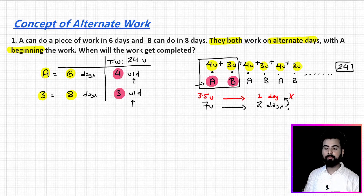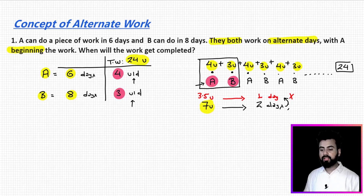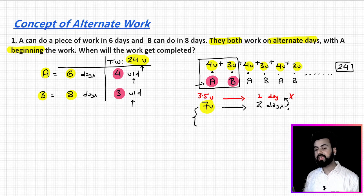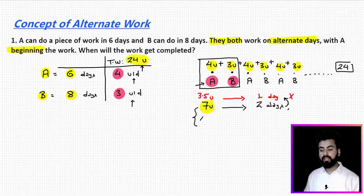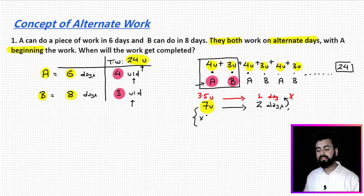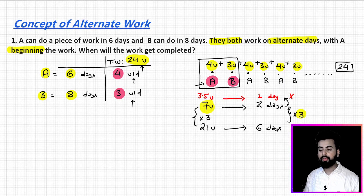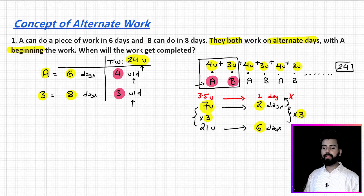Since we want to complete 24 units, we find a multiple of 7 that is close to 24 but does not exceed it. Seven into three gives 21, which is the closest multiple of 7 less than 24. Multiplying both sides by 3, we get: 21 units of work is completed in 6 days. This represents 3 complete cycles, each of length 2 days, giving us 6 days total.